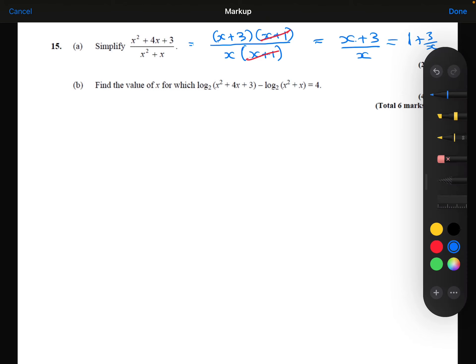Part B. Find the value of x for which log base 2 of x squared plus 4x plus 3 minus log base 2 of x squared plus x is equal to 4.